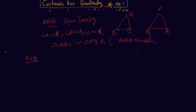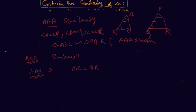One type is AA similarity, in which angle A equals angle P, angle B equals angle Q, and the corresponding middle side AB equals BC is in equal ratio. So we can say the two triangles are similar by AA similarity. There is also SAS similarity, in which two sides like BC equals QR and CA equals PR, and the corresponding angle between these sides is equal — this is called SAS similarity.